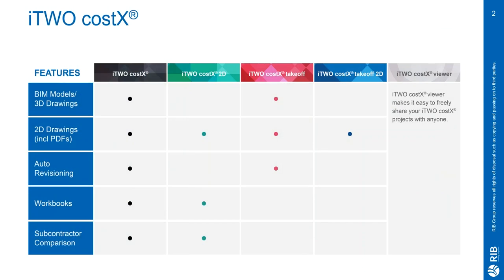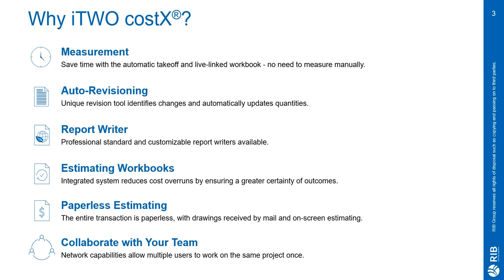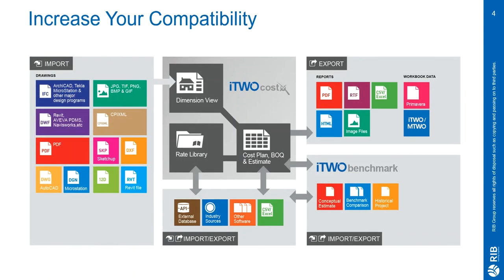i2CostX is a fully integrated estimating solution with universal application, supporting everything from hand-drawn sketches to PDFs, 2D and 3D CAD drawings and BIM files. It is available in a variety of feature levels depending on the size of your business or your estimating requirements. i2CostX offers quick and easy on-screen takeoff and measurement that can be live linked to our comprehensive workbooks to help you save time and eliminate errors. The platform also offers a professional report writer, an auto-revisioning tool to help with new drawing revisions, and there are a huge variety of file types supported to help with compatibility.